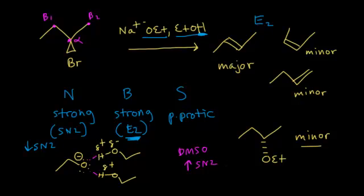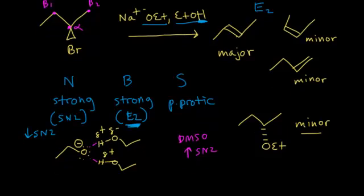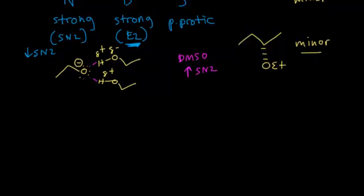Let's look at one more example. We've seen SN2, SN1, and E2. E1 is also possible, although usually not with an alkyl halide. The main place you would see an E1 mechanism is with something like a secondary alcohol.